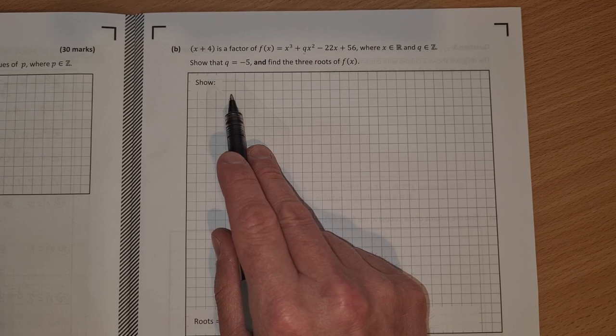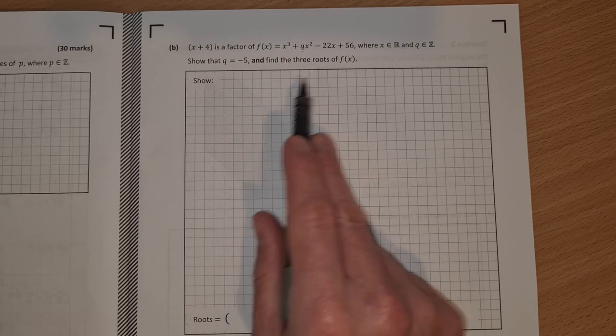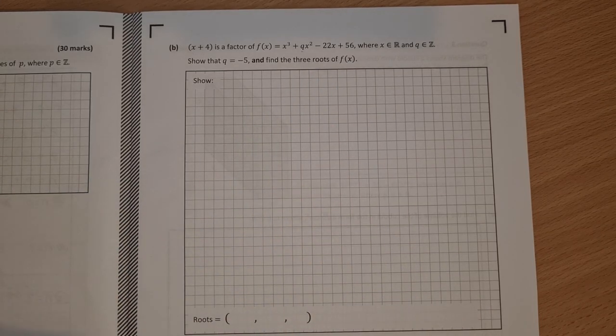And then my first root is x equal to minus 4. I'll get a quadratic on top and I'll be able to find my other two roots then.